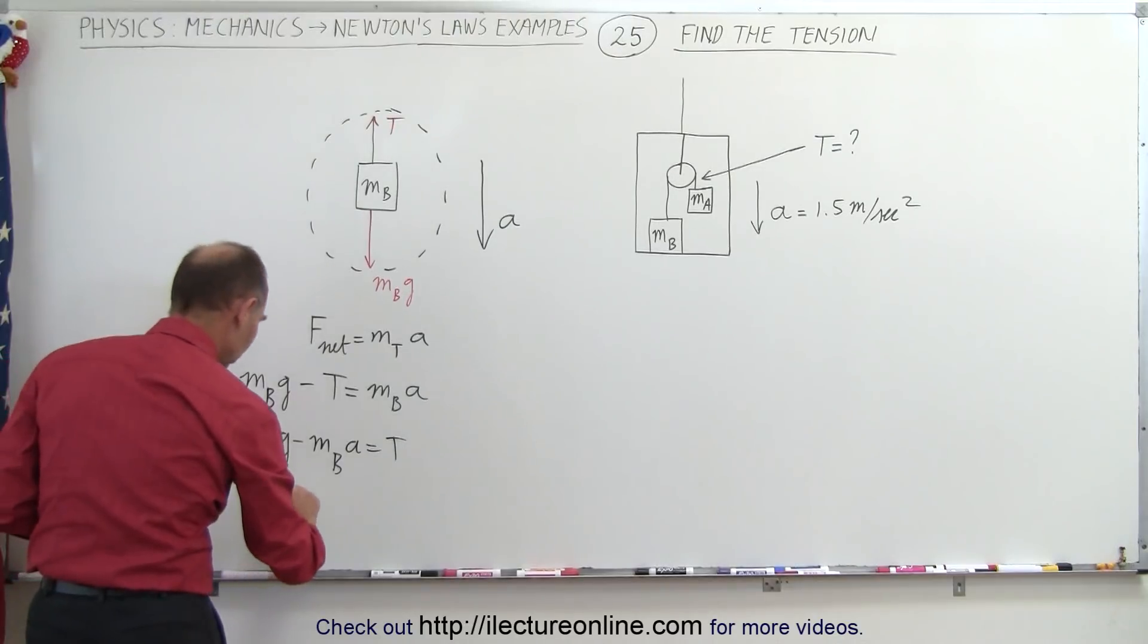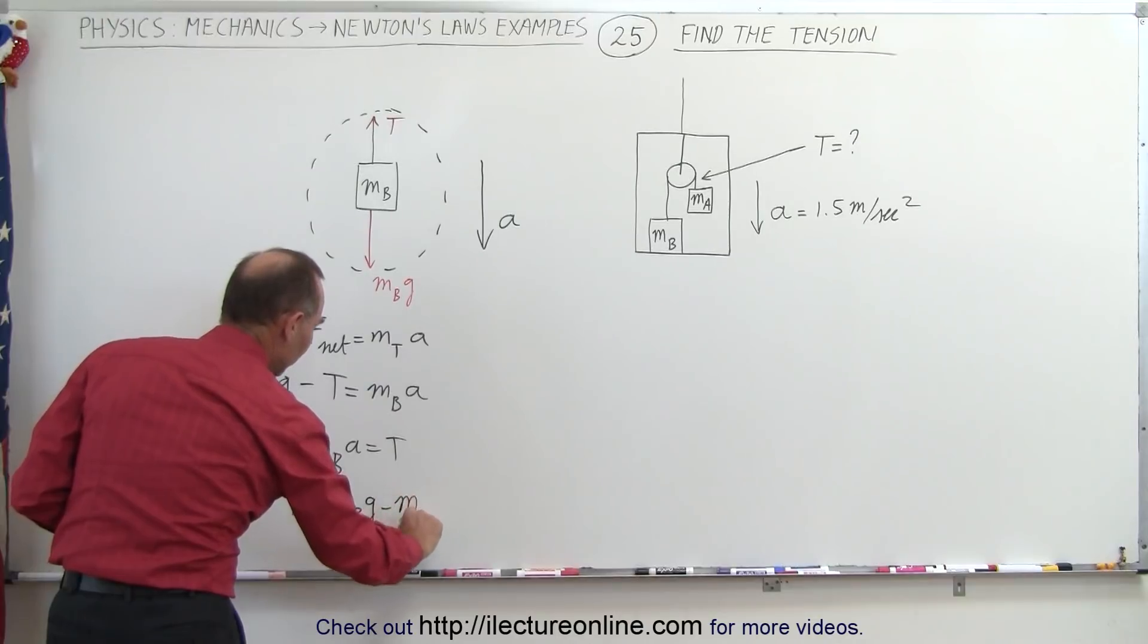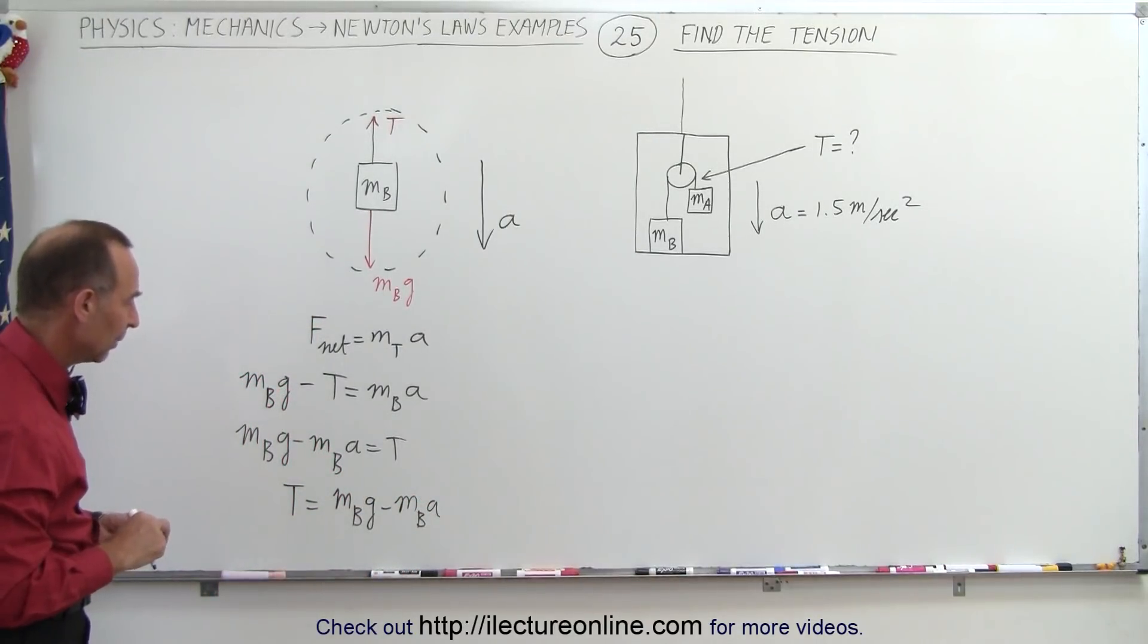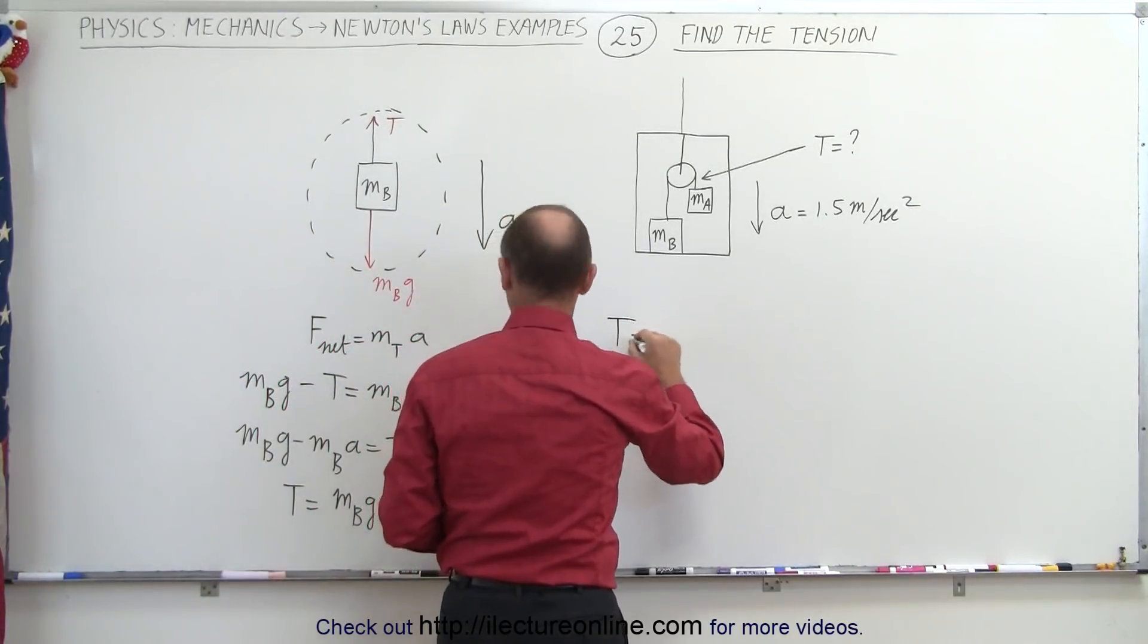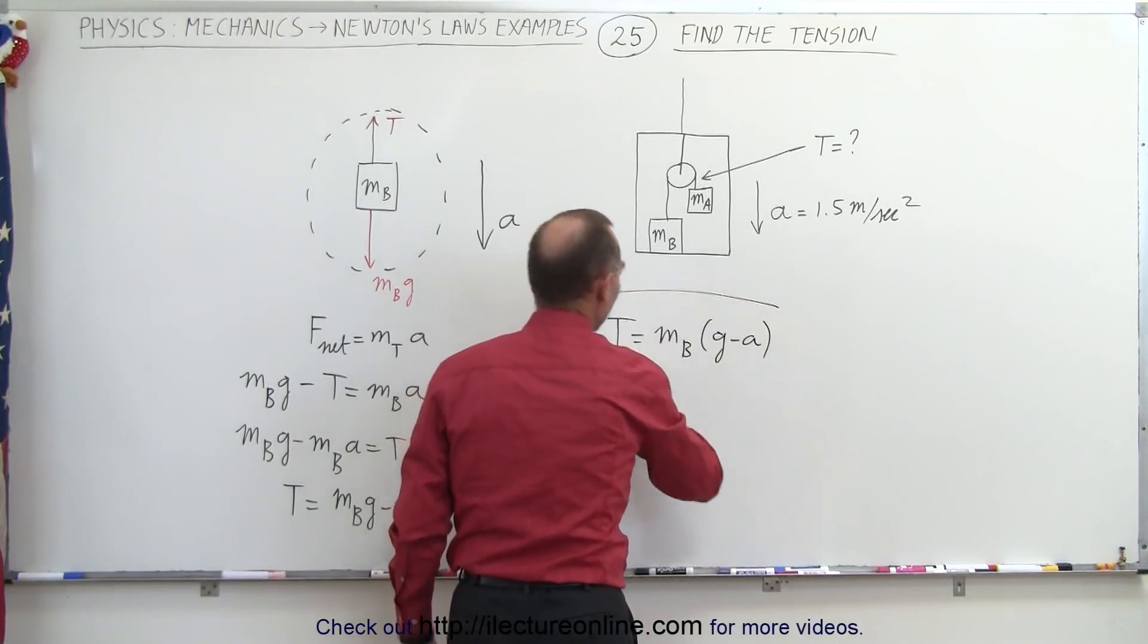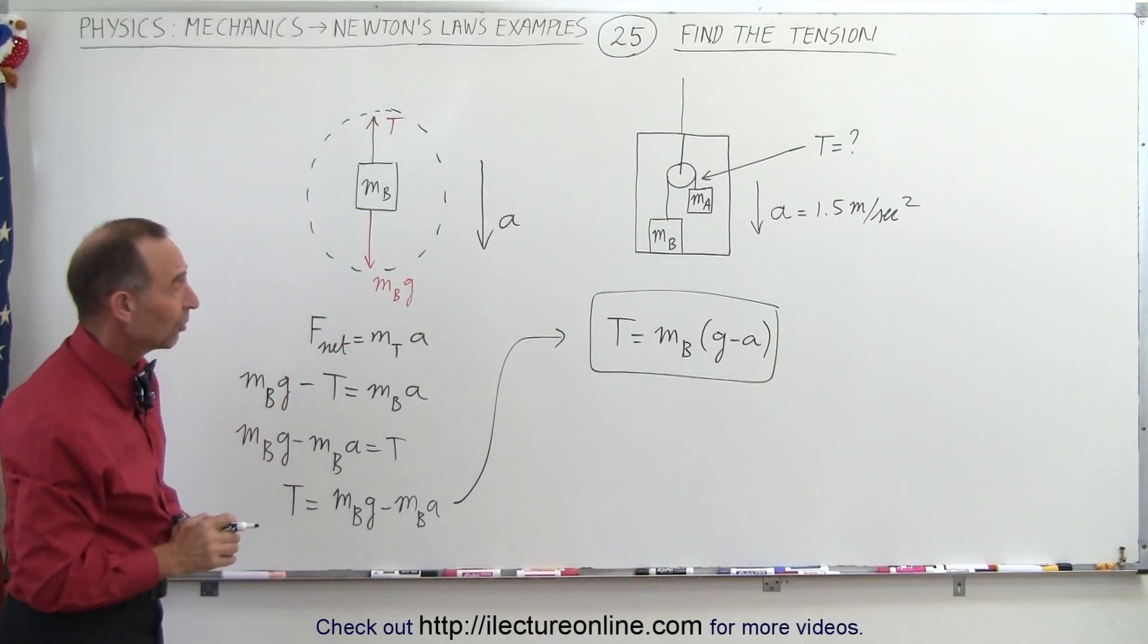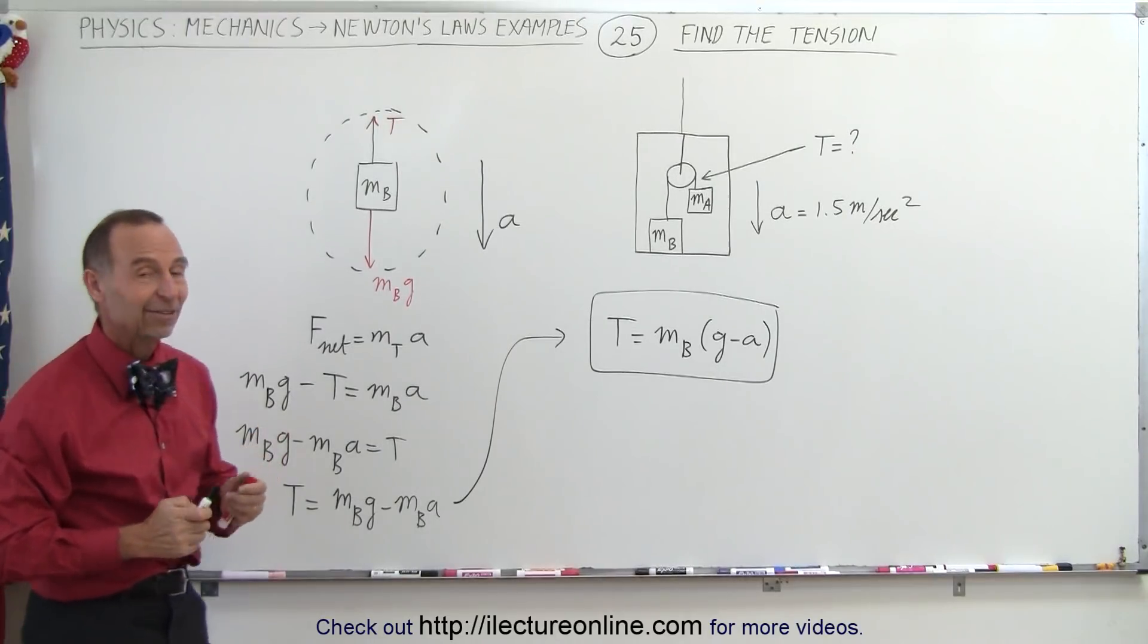And then we could factor out an m_b, so we can write it like this: the tension in the string equals m_b times (g minus a). And that would be one way which we can express the tension in the string on that elevator that's accelerating downward, and that's how it's done.